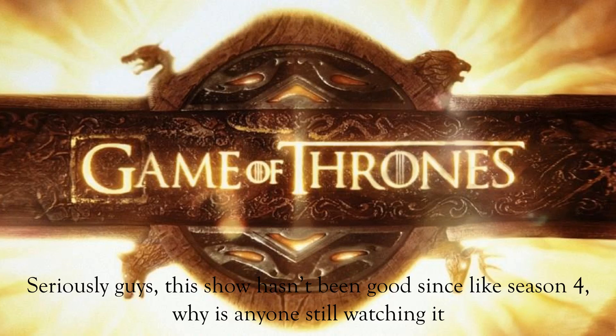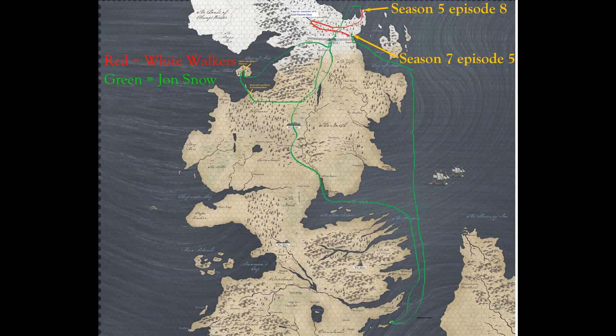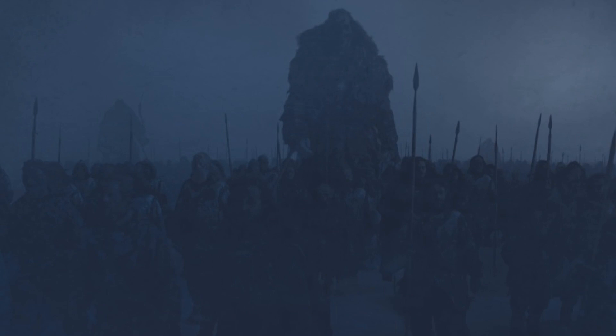If you aren't consistent with your use of scales, people notice. This is one criticism of the Game of Thrones TV show which has actually hit the popular consciousness. This map shows how far the White Walkers and Jon Snow travelled between Season 5, Episode 8 and Season 7, Episode 5. Sure, Jon has access to boats and horses while the White Walkers are on foot, but the White Walkers also don't need to eat or sleep. Those are some really, really slow zombies.